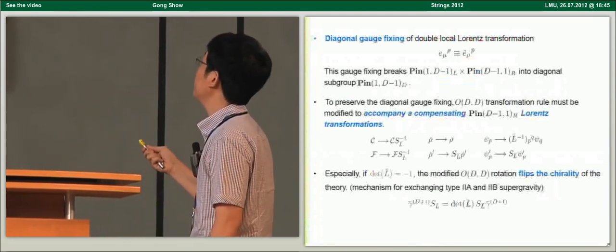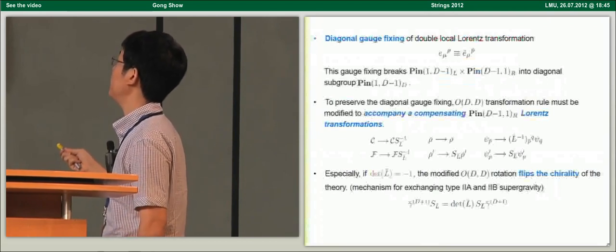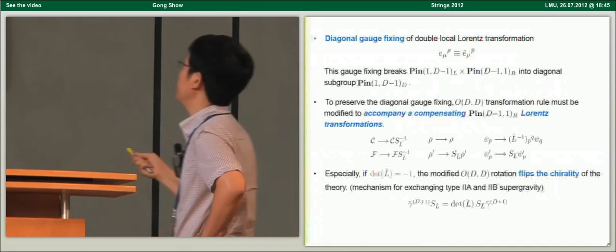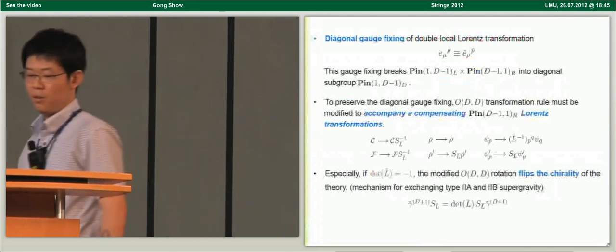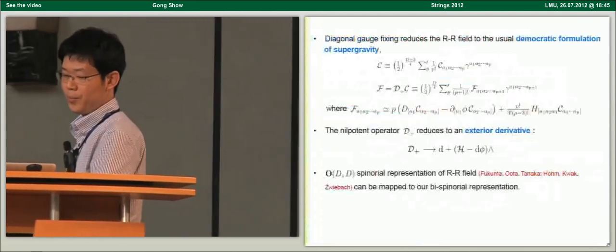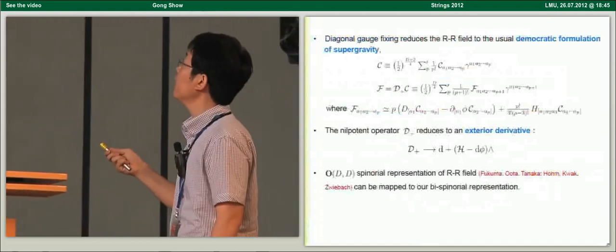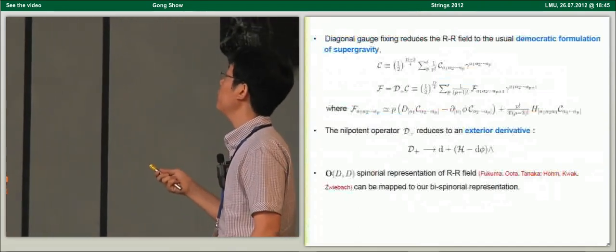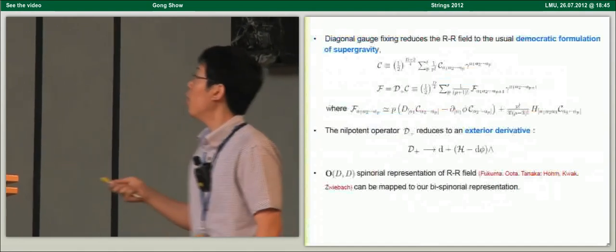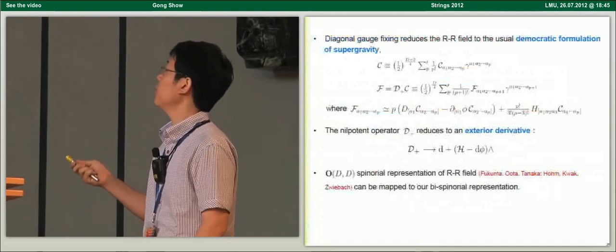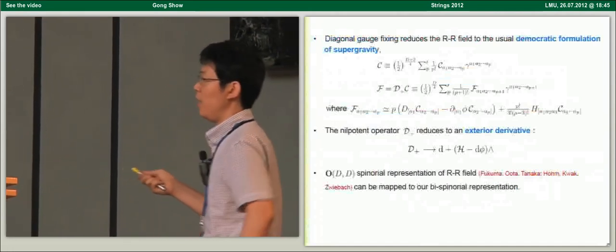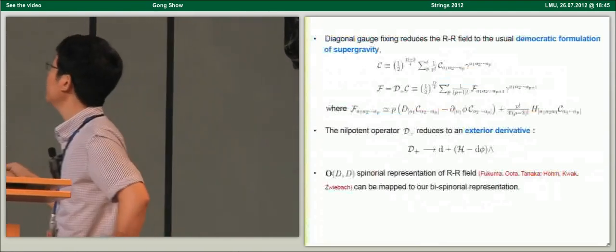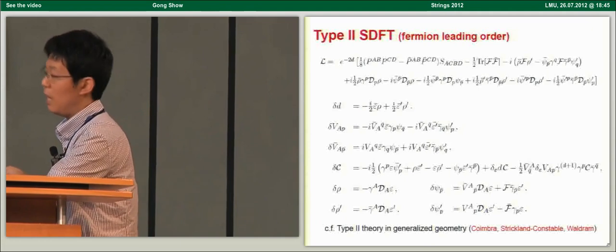If the determinant of L-bar is minus one, the vielbein parity rotation creates chirality of the theory, giving the mechanism for exchanging type IIA to type IIB supergravity. Diagonal gauge fixing leads the R-R field to the democratic formulation of supergravity, and the important operator D-plus leads to the exterior derivative. There is another choice of R-R field representation — the audit spinorial representation — done by others, and we show that this formalism is equivalent to our formalism. This is type II supersymmetric double field theory up to very high leading order.